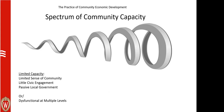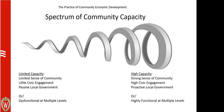At the other end of the spectrum are communities with high capacity and high levels of preparedness — a strong sense of community, high levels of civic engagement, a proactive local government, high levels of social capital and resiliency. It's highly functioning at multiple levels. This is a corkscrew-type pattern because these characteristics can vary over time and also by the issue you're working on.